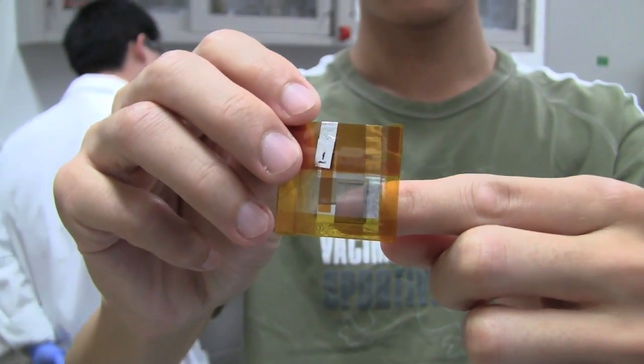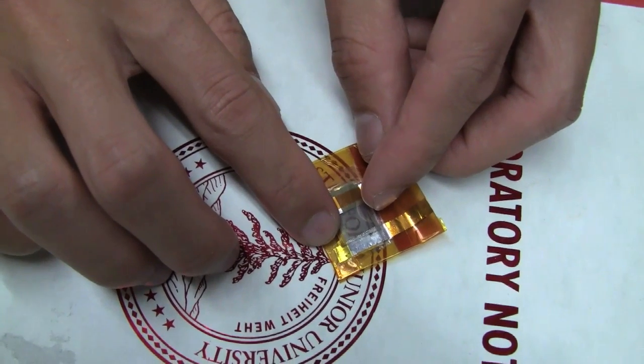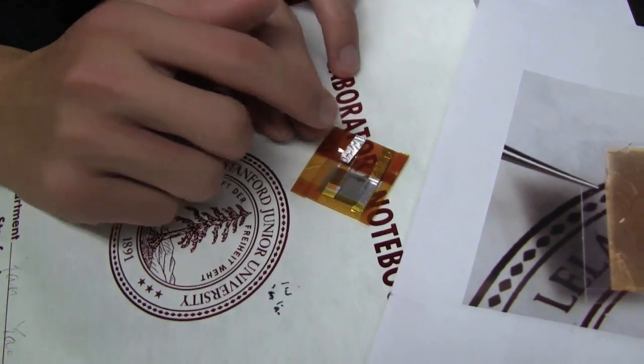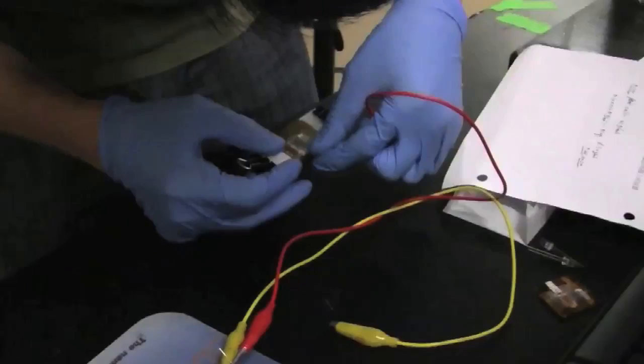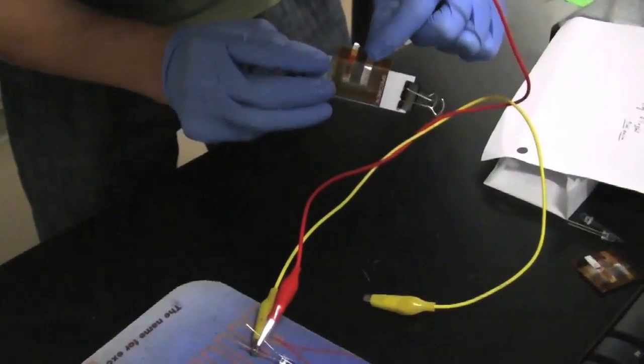The motivation is to enable cool gadgets such as totally transparent cell phones. Other researchers have made transparent displays, but this is the first time a transparent energy storage device with a decent storage capacity has been demonstrated. It's the final component needed to make totally transparent electronics.